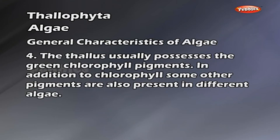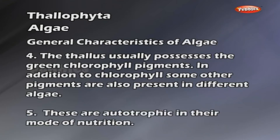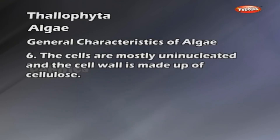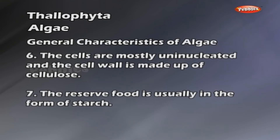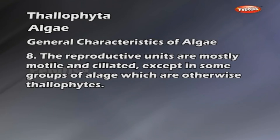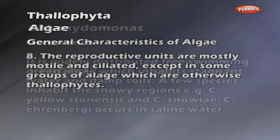In addition to chlorophyll, some other pigments are also present in different algae. These are autotrophic in their mode of nutrition. The cells are mostly uninucleated and the cell wall is made up of cellulose. The reserve food is usually in the form of starch. The reproductive units are mostly motile and ciliated except in some groups of algae.